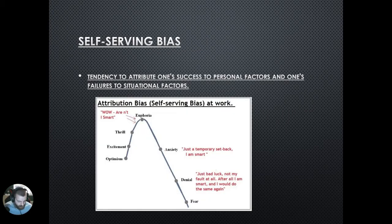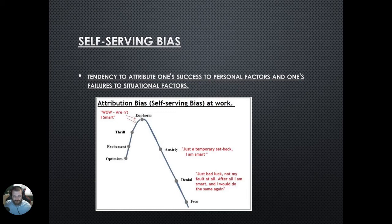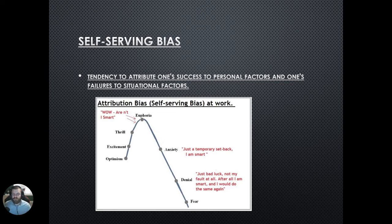With the self-serving bias, we typically favor our own successes. When you're successful, you want to claim and own that success, so you attribute it to personal factors. For example, if you're running a clothing company and business is booming, you say you're a great salesperson and businessperson. However, if business is failing and bankruptcy is looming, suddenly you put the blame on situational factors. When things are great, it's all you; when you're experiencing failure, you blame the environment or situation.